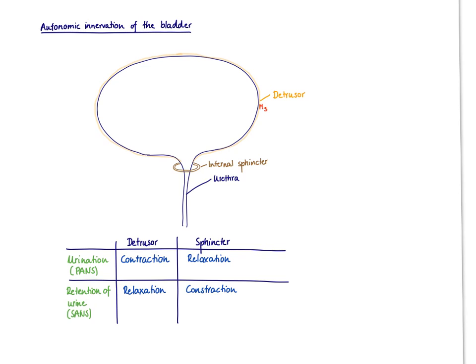In this video, I'm going to talk about the autonomic innervation of the bladder. When we are in rest and digest mode, when the parasympathetic nervous system is activated, we want to urinate.